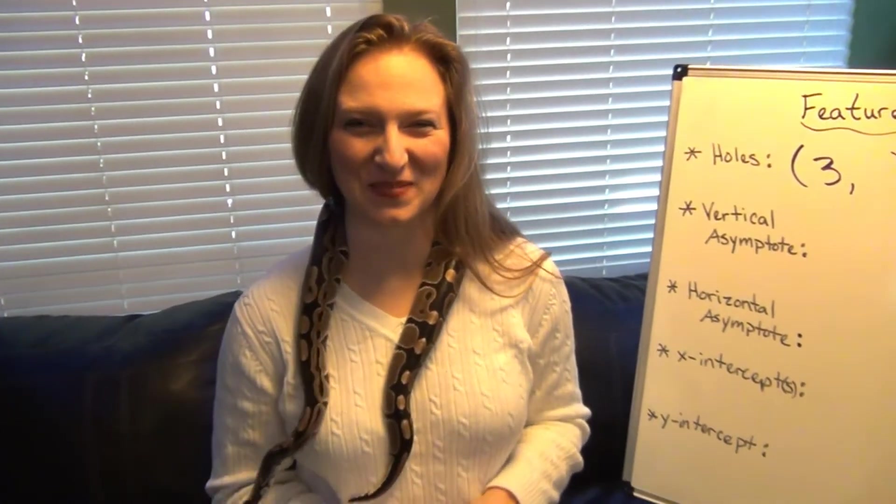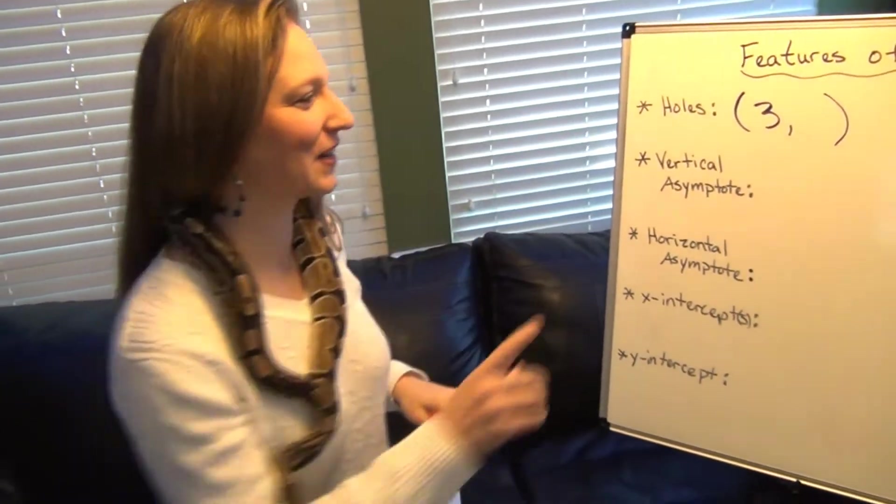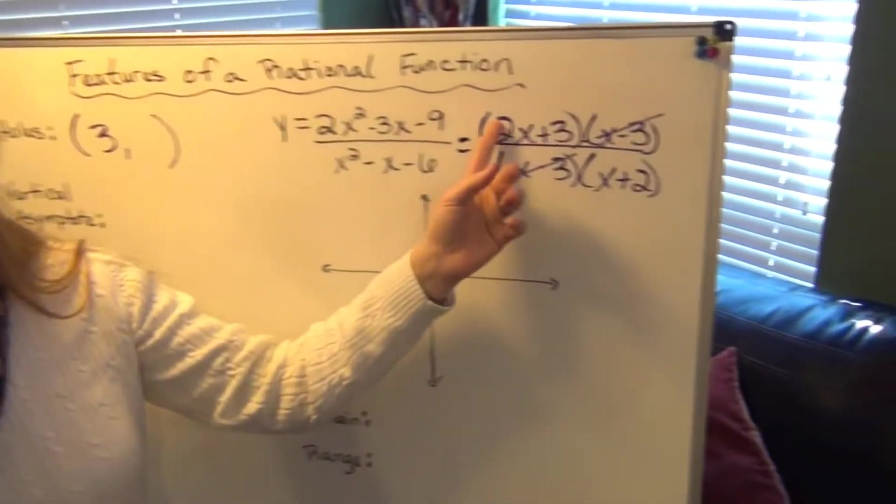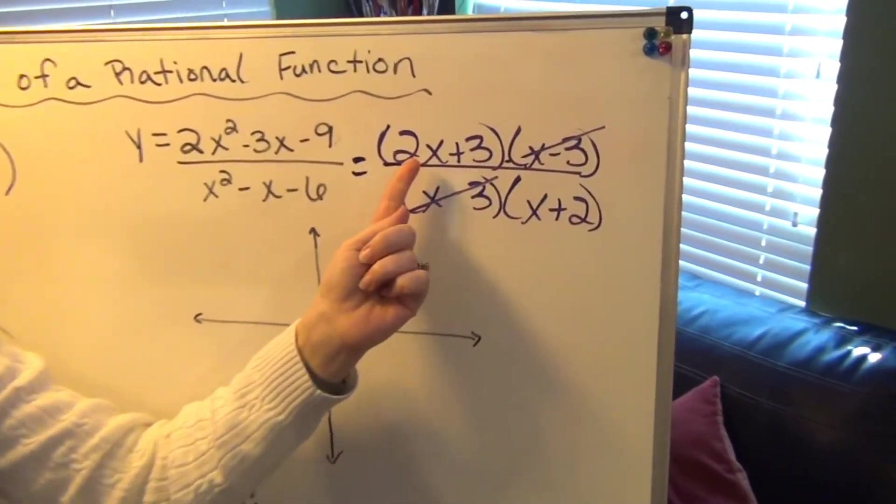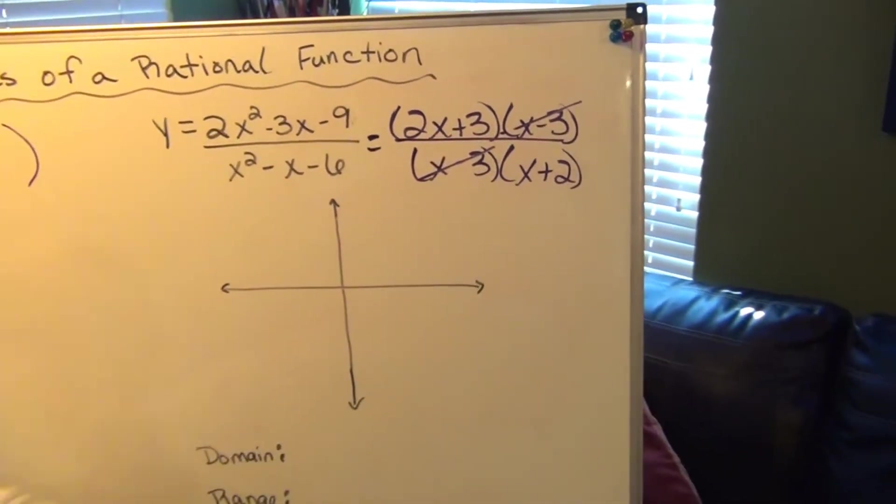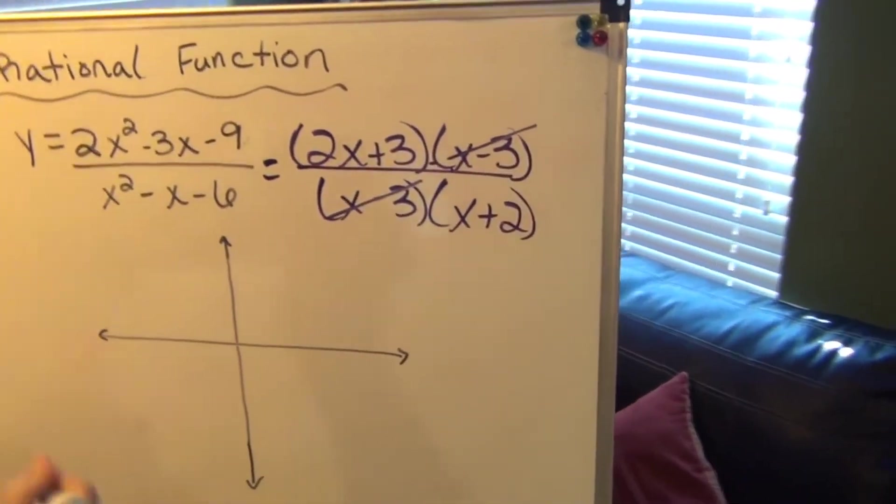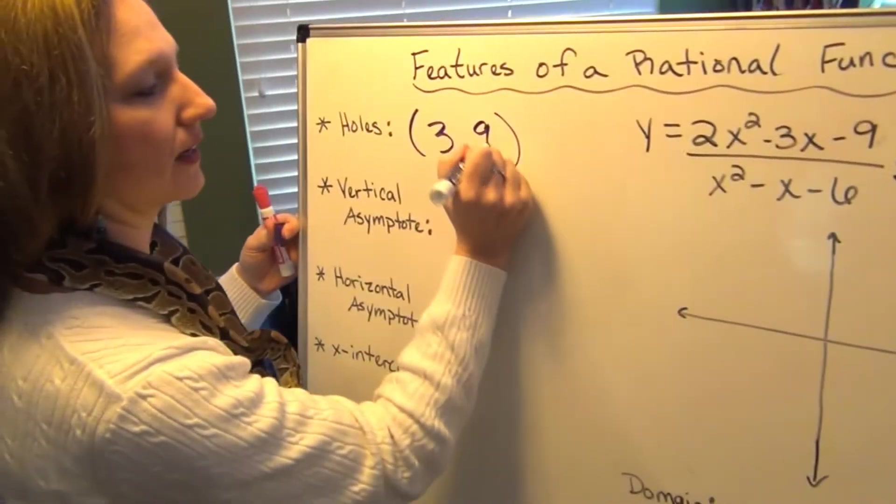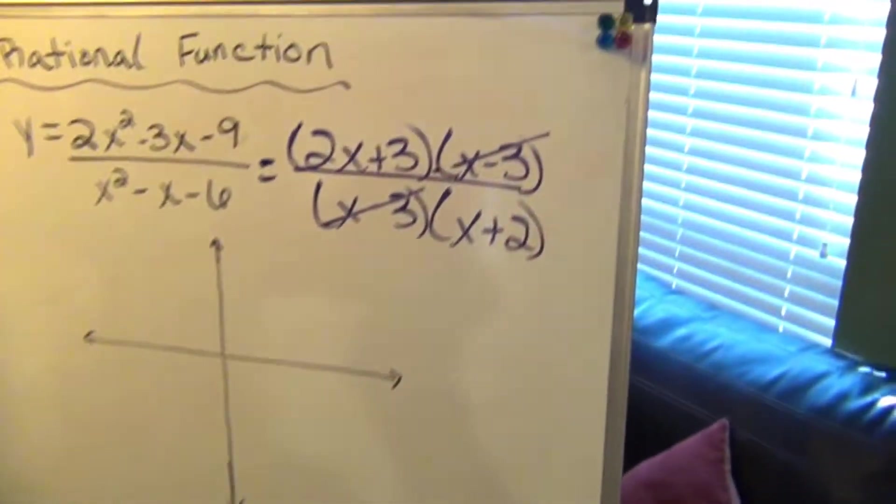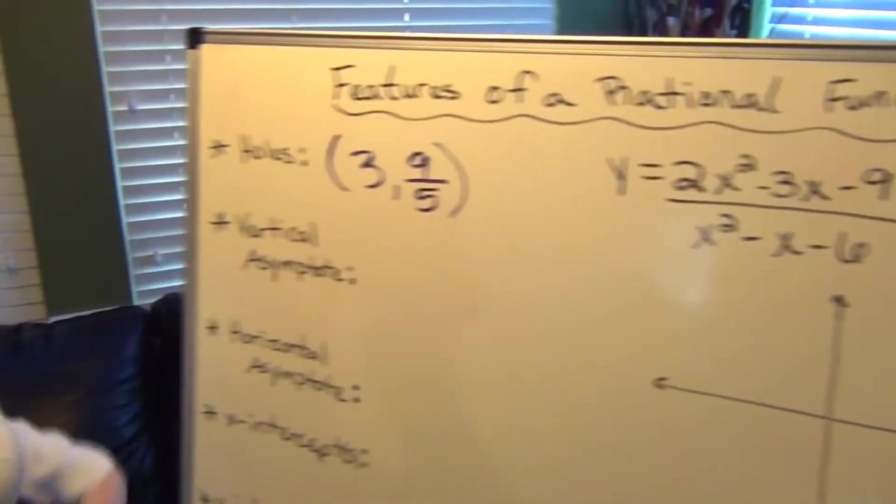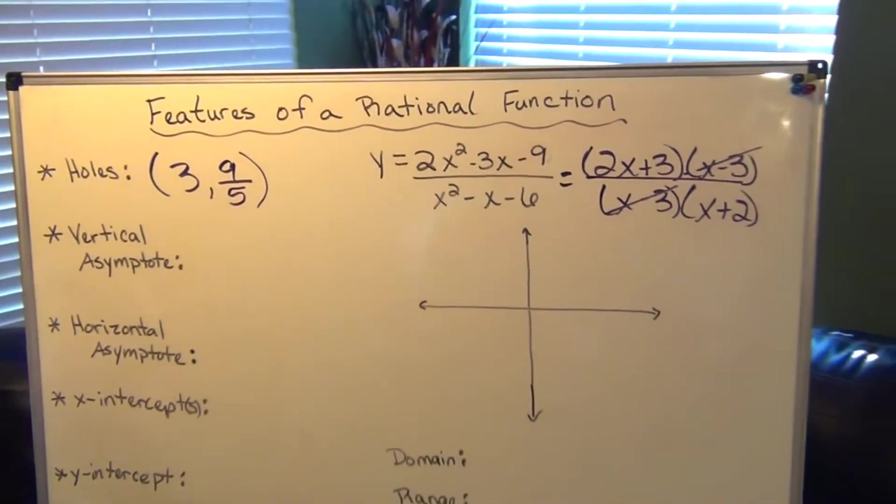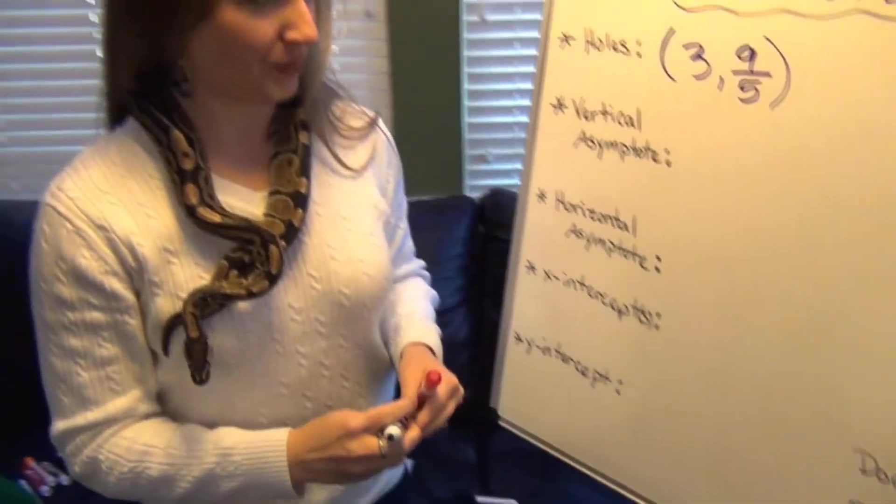And since x minus 3 set equal to 0 would be 3, that tells us 3 is going to be the x part of the intercept. Okay, are you ready to find the y part? So to find the y part, you're going to take 3 and you're going to plug in what's left of the function. So if I plug in 3 right here, 2 times 3 is 6 plus 3 is 9. So the top is going to be 9. And if I plug in 3 here, 3 plus 2 is 5. That is the y part of our hole. So whenever we draw our graph, we're going to have a hole there at 3, 9/5.